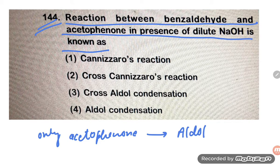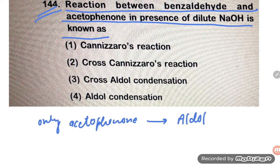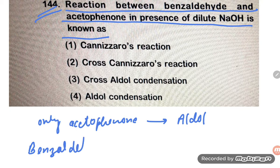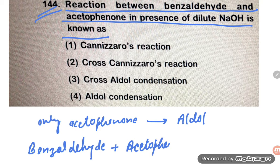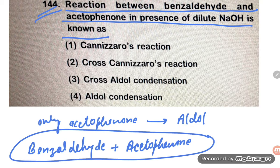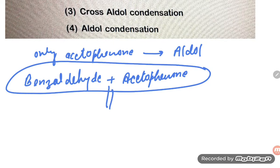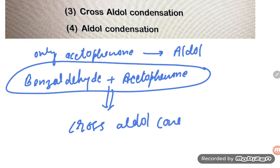Here we have benzaldehyde plus acetophenone. So two different compounds are there — two different aldehydes are there. When two different aldehydes are present, that is cross aldol condensation.